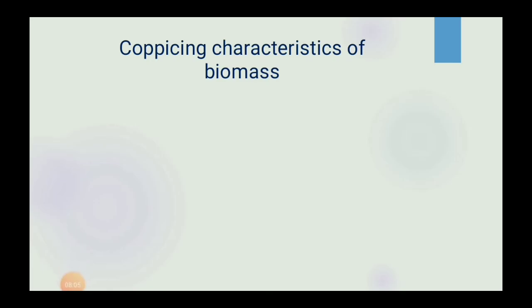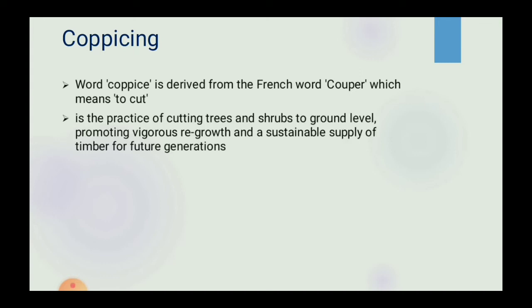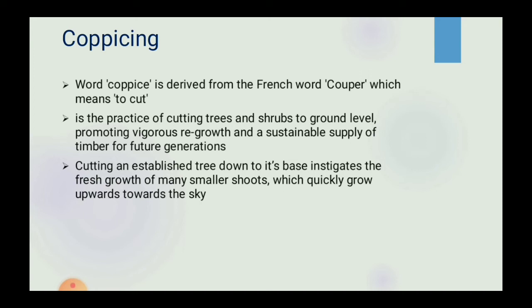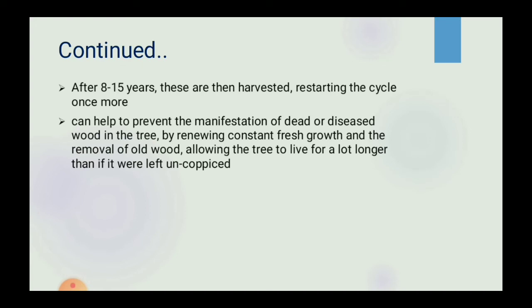Coppicing characteristics of biomass. The word coppice is derived from the French word 'couper' which means to cut. It is the practice of cutting trees and shrubs to ground level, promoting vigorous regrowth and a sustainable supply of timber for future generations. Cutting an established tree down to its base instigates the fresh growth of many smaller shoots which quickly grow upwards. After 8–15 years, these are then harvested, starting the cycle once more. It can help prevent the manifestation of dead or diseased wood by renewing constant fresh growth and removal of old wood, allowing the tree to live much longer.